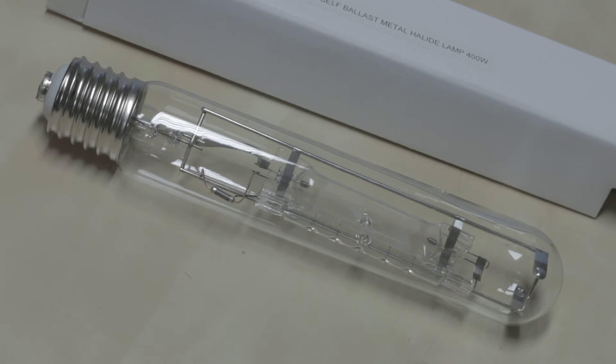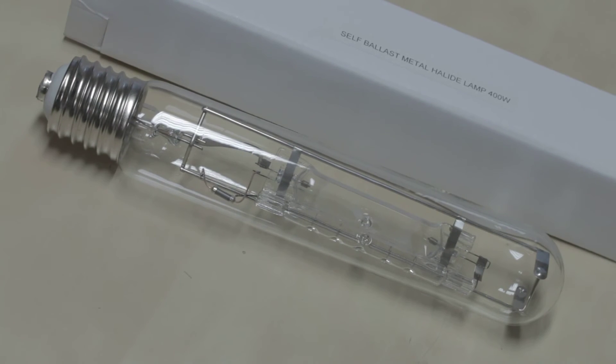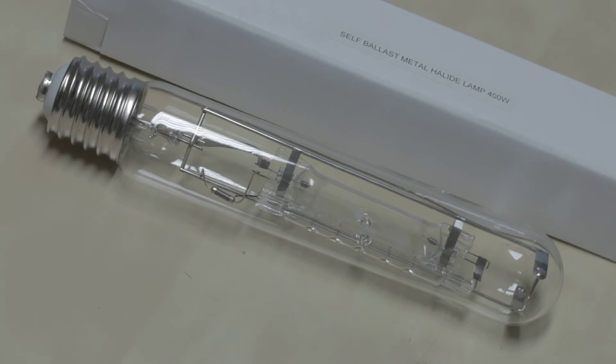Now going back to the original point of this video, quite a while ago I picked this up on eBay. It's cheap. Ignore this box. It says self-ballasted metal halide lamp, but that's a lie because there's no halides in the arc tube. It's just a pure mercury vapor.